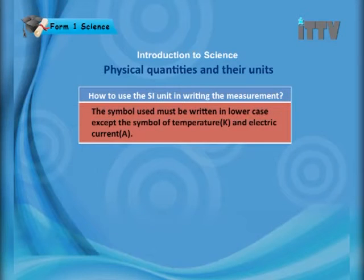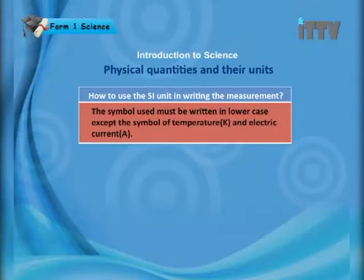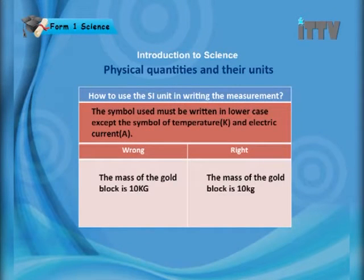The symbol used must be written in lower case, except for temperature Kelvin (K) and electric current ampere (A). For example, the wrong way is writing the mass of a gold block as '10 KG' — capitalizing K and G is incorrect. The right way is '10 kg' with small letters. Remember: use lowercase for all SI unit symbols except Kelvin and ampere.